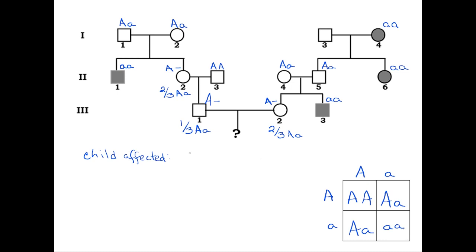Thus, the total probability that the child will be affected is 1/3 × 2/3 × 1/4, or 2/36, which is equal to 1/18.